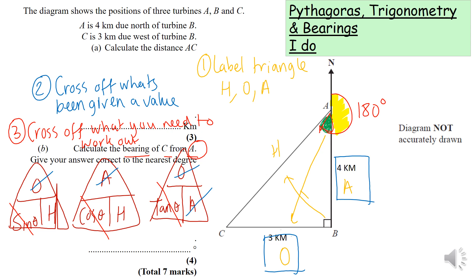How do we use the formula triangle? We look at the one that's got everything crossed off. Cover tan of the angle and it'll give you that you need to do opposite divided by adjacent.